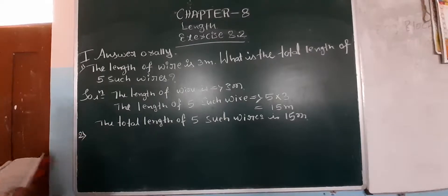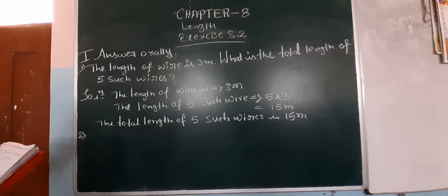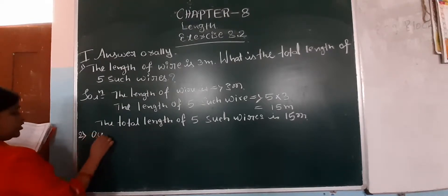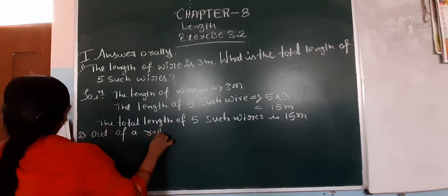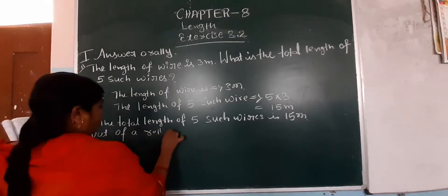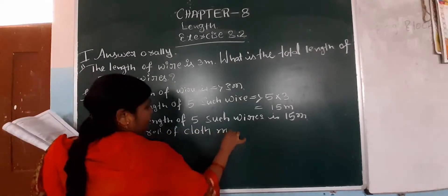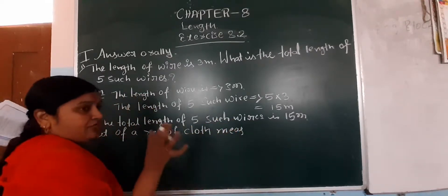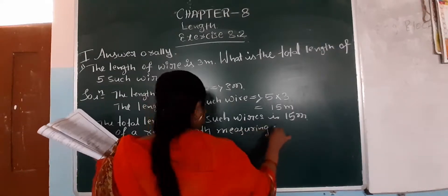In the second question: a bundle of cloth measures 50 meter total. Out of this, 17 meter of cloth is sold. Find the length of the remaining cloth.